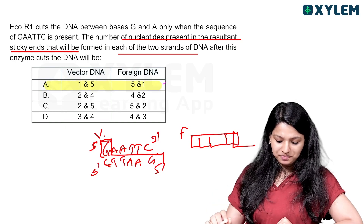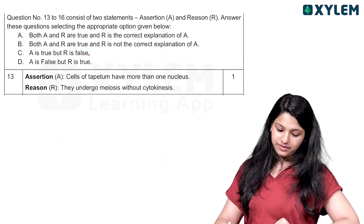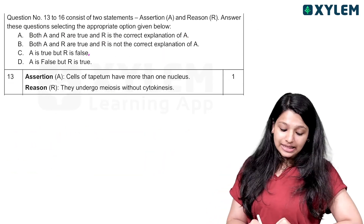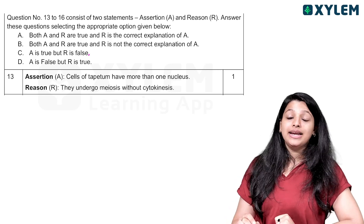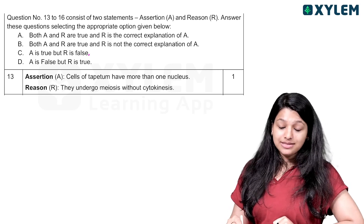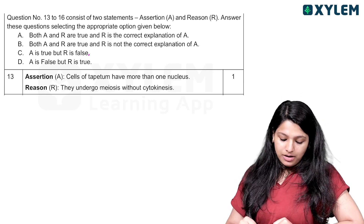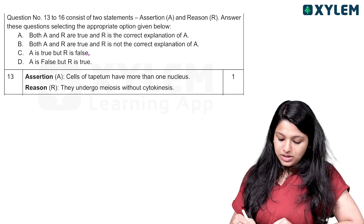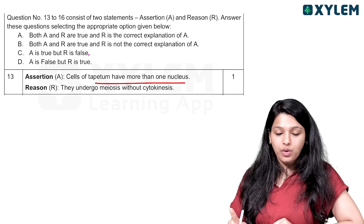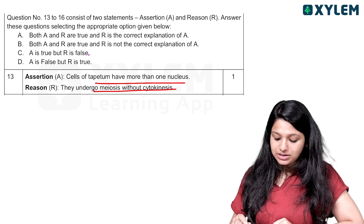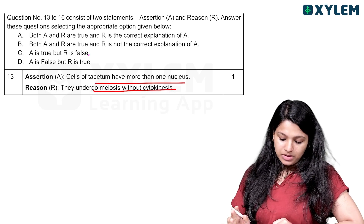Option A is the correct answer. This is an assertion-reason question. Questions 13 to 16 consist of two statements. The assertion states that cells of tapetum have more than one nucleus and they undergo meiosis without cytokinesis.